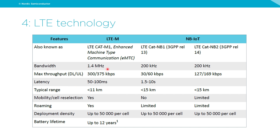One useful thing about the smaller bandwidth of narrowband IoT is that the receiver is better able to filter out noise, giving better receiver sensitivity on narrowband IoT versus LTE-M. Better receive sensitivity leads to a better link budget and better typical range on narrowband IoT. On the other hand, higher max throughput on LTE-M means better latency on LTE-M versus narrowband IoT.